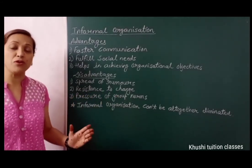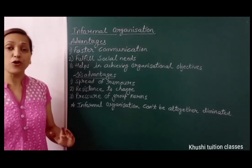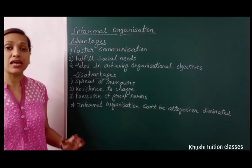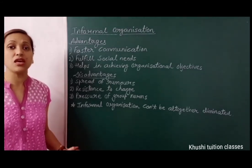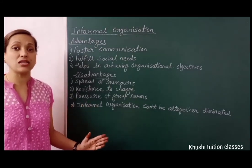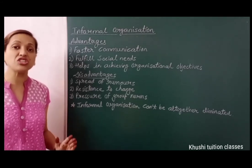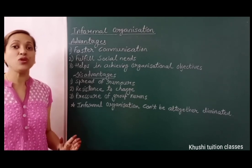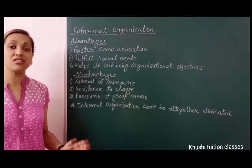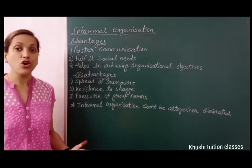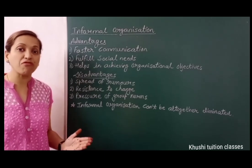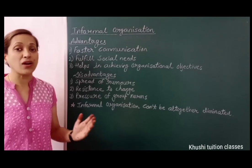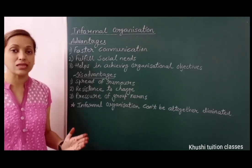The second disadvantage is resistance to change. Sometimes management wants to adopt a new plan and policy or change technology, but if informal groups oppose it, it becomes difficult to implement such changes. For example, if a trade union goes on strike for wage increases, it becomes very difficult for management to convince the group to keep wages at the same scale.